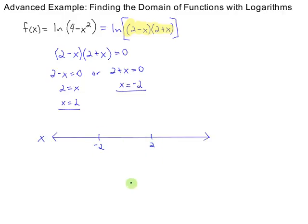And I want to evaluate what the argument is, 2 minus x, times 2 plus x, at all the different regions here. Clearly, if x is negative 2 or 2, the argument is 0. That's what we found up here.